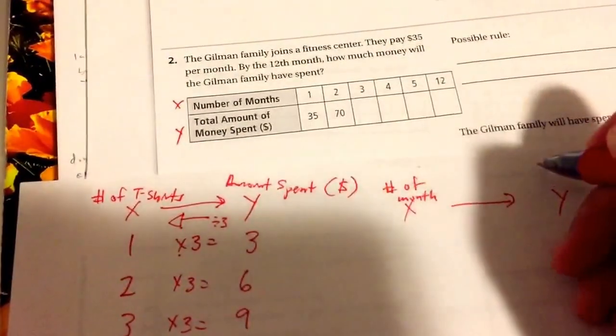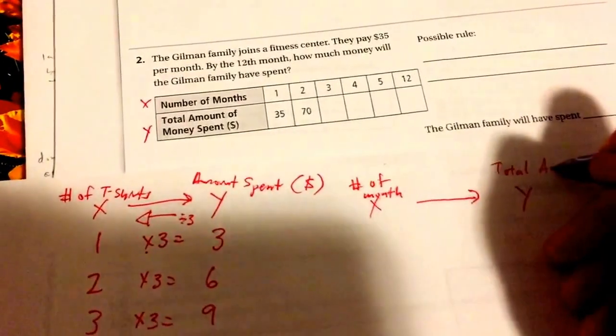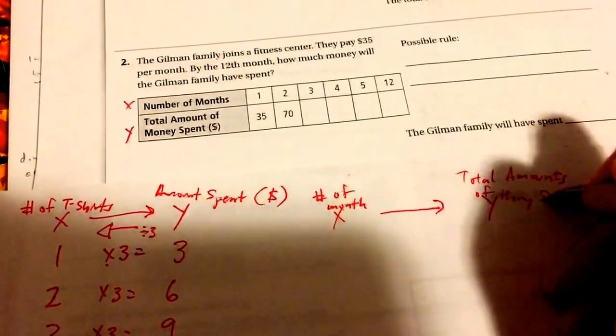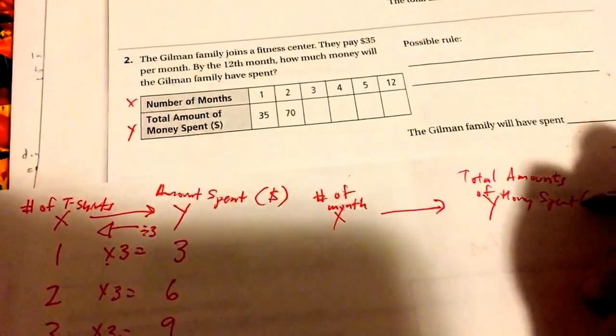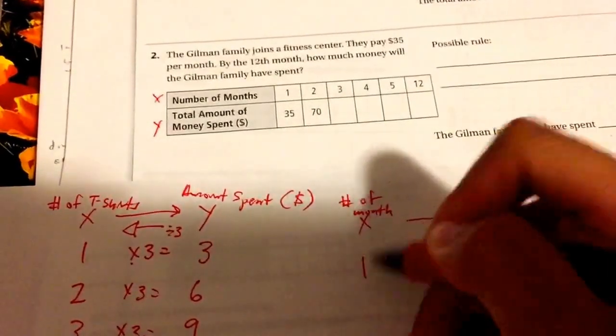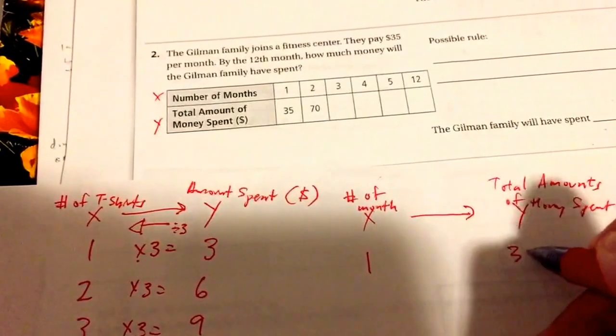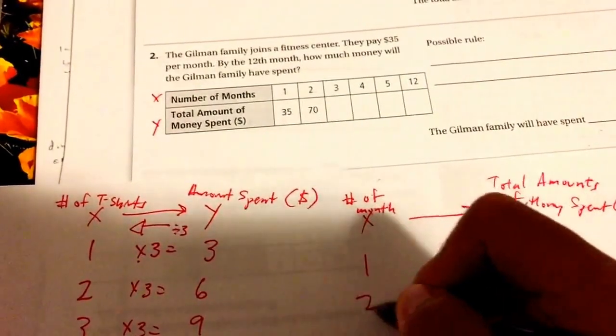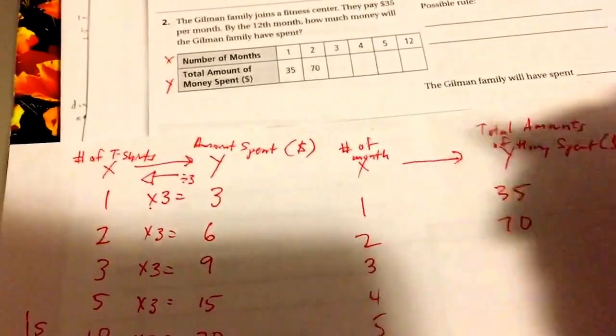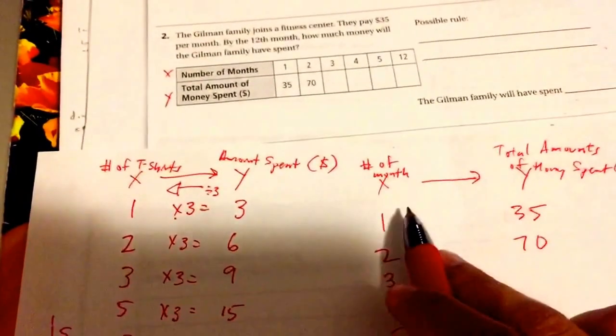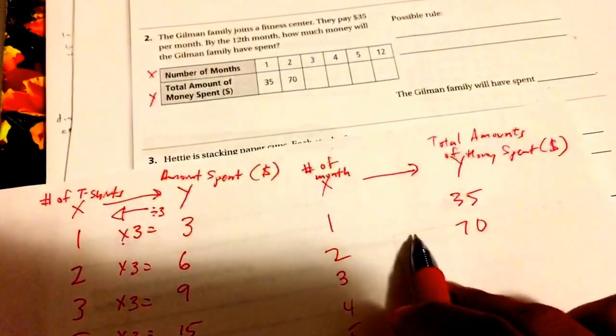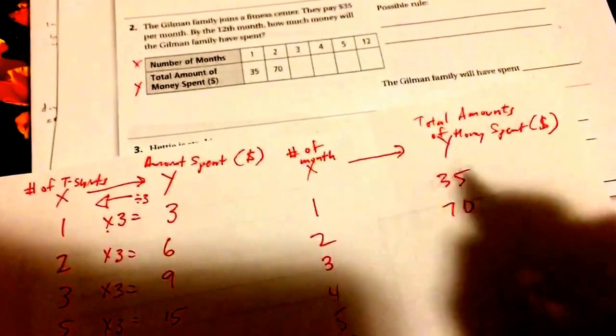And it's imperative that you label this—imperative meaning it's really important. X is your number of months, Y is the total amount of money spent, in US dollars. For the first month, month one, it costs thirty-five. Month two, it costs seventy. You're doing it for three, four, five, and twelve. So find your rule here. It's getting larger, so you're either going to multiply or you're going to add. And make sure that if you do it for here, it works for this one, and then you could solve this, this, all the way until you get to twelve.